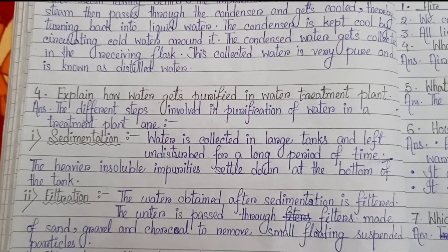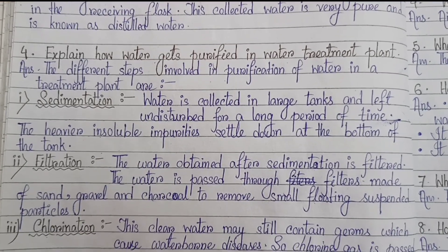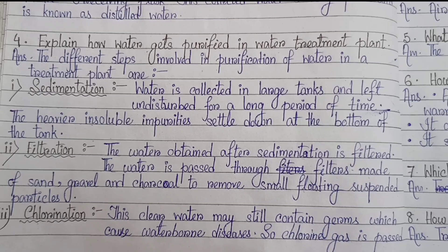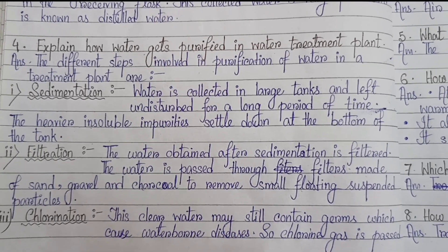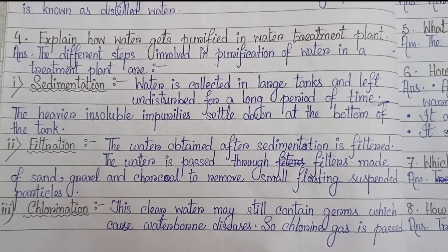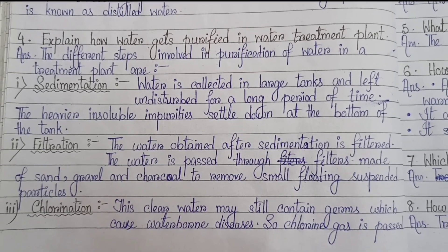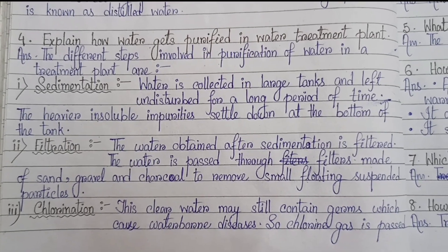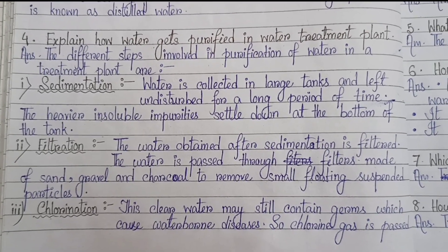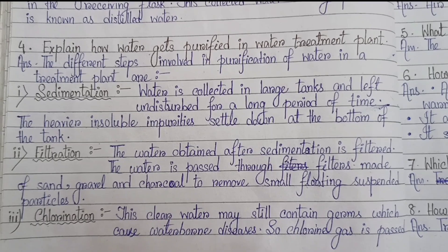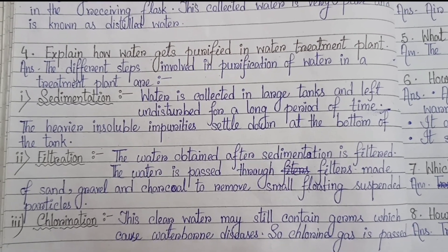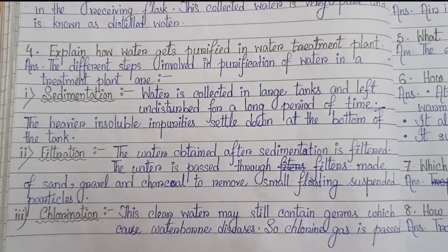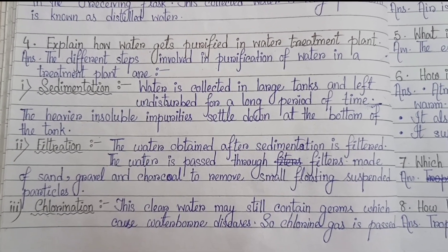Number 4: explain how water gets purified in a water treatment plant. The different steps involved in purification of water in a treatment plant are: 1. Sedimentation — water is collected in large tanks and left undisturbed for a long period of time; the heavier insoluble impurities settle down at the bottom of the tank. 2. Filtration — the water obtained after sedimentation is filtered; it is passed through filters made of sand, gravel, and charcoal to remove small floating suspended particles.